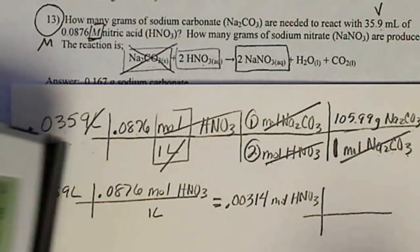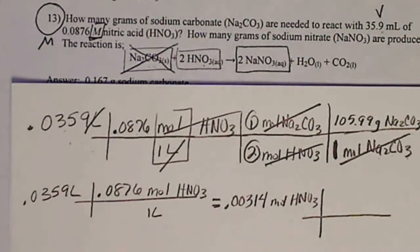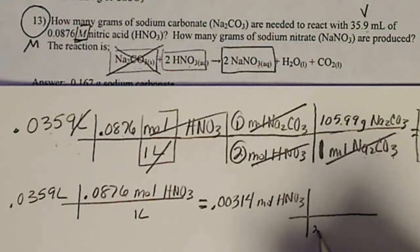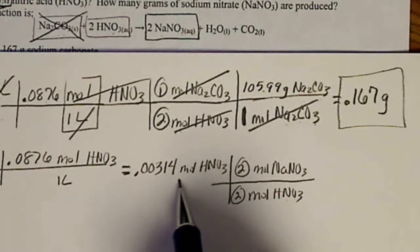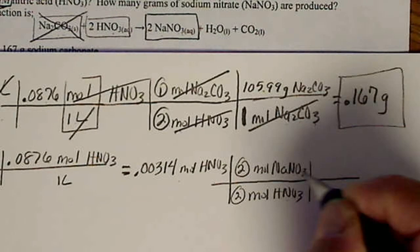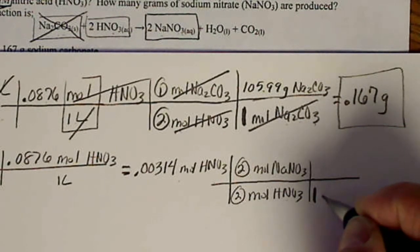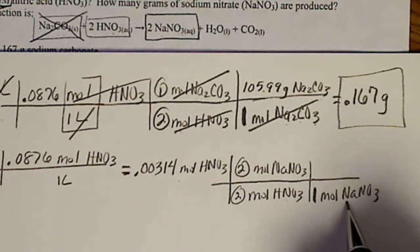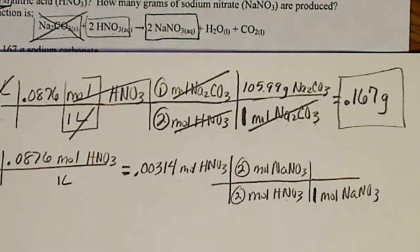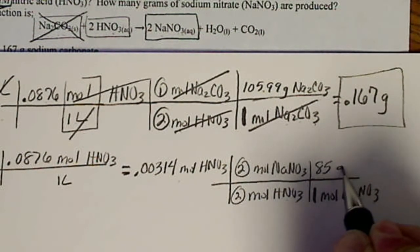I still have to go to the balanced equation to convert to moles of sodium nitrate. So 2 to 2. So it takes 2 moles of sodium nitrate for every 2 moles of nitric acid, NaNO3. So this number is going to stay the same. And then we need the molar mass of the sodium nitrate. So the big fat one, 1 mole of NaNO3 weighs 1 sodium plus 1 nitrogen plus 3 oxygens, and that weighs 85 grams.